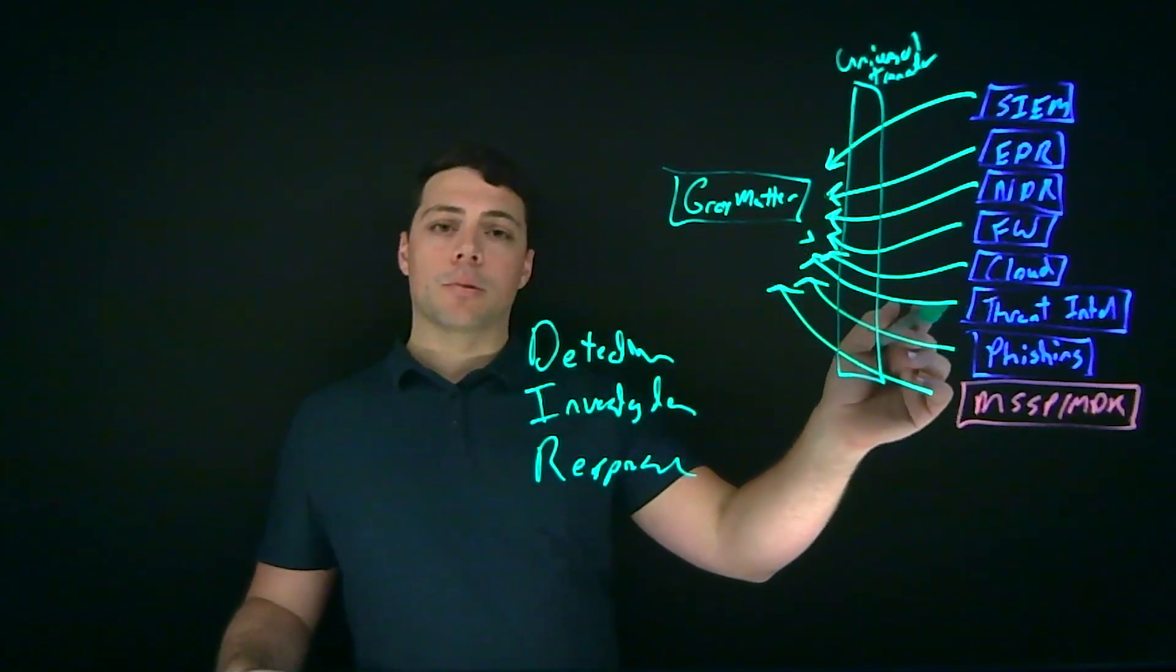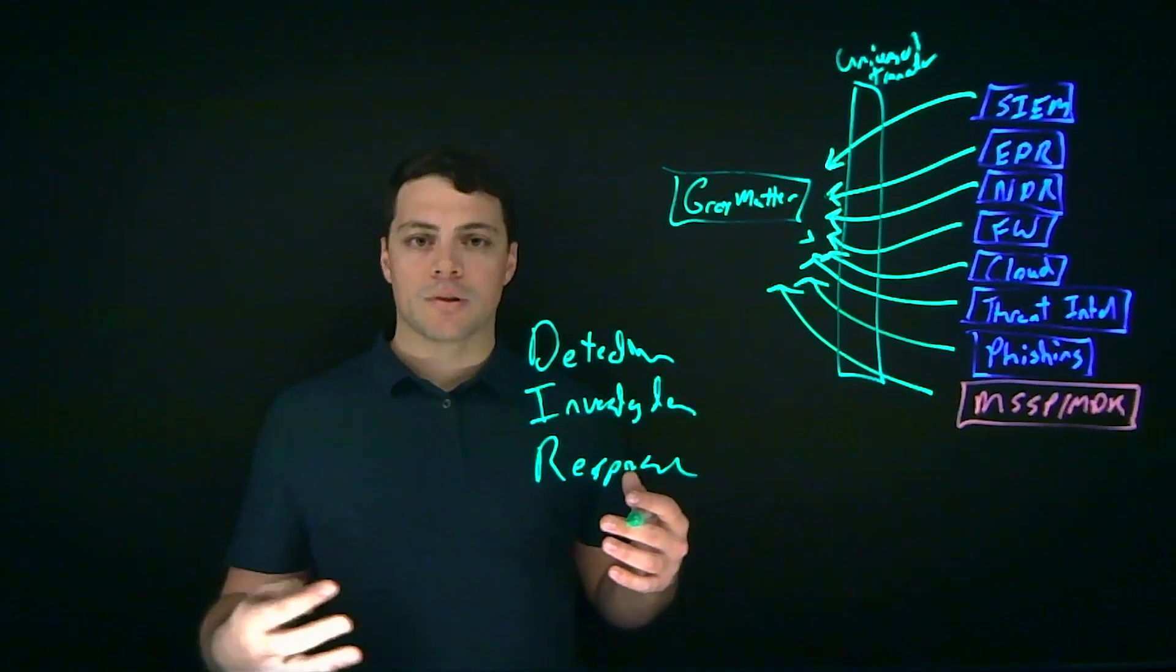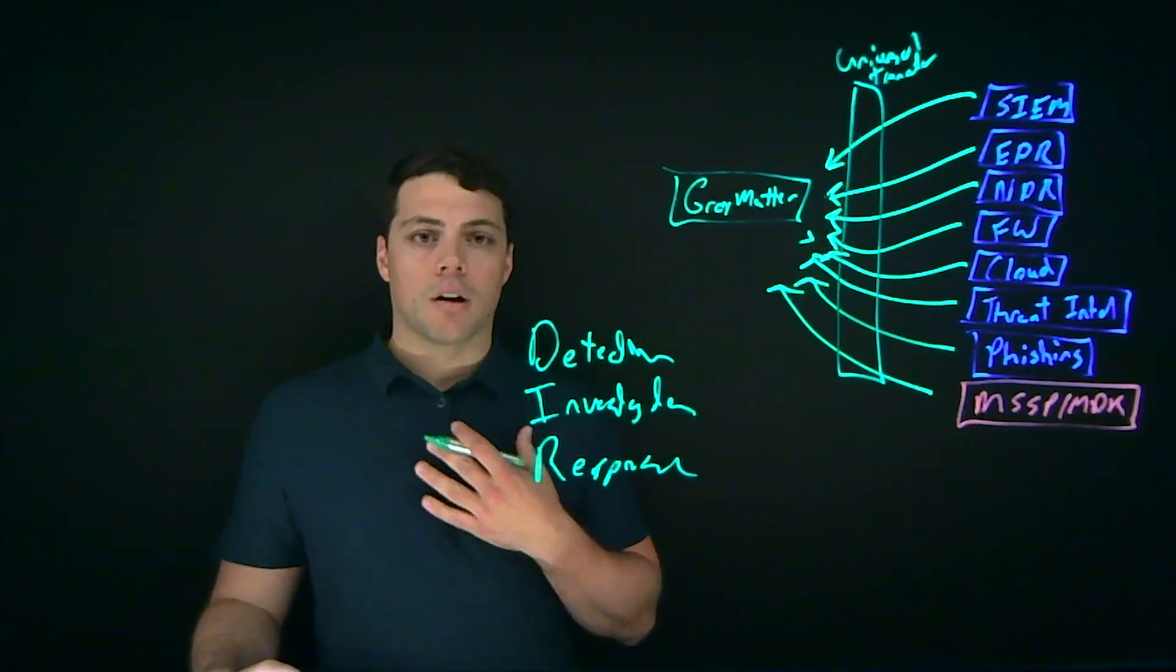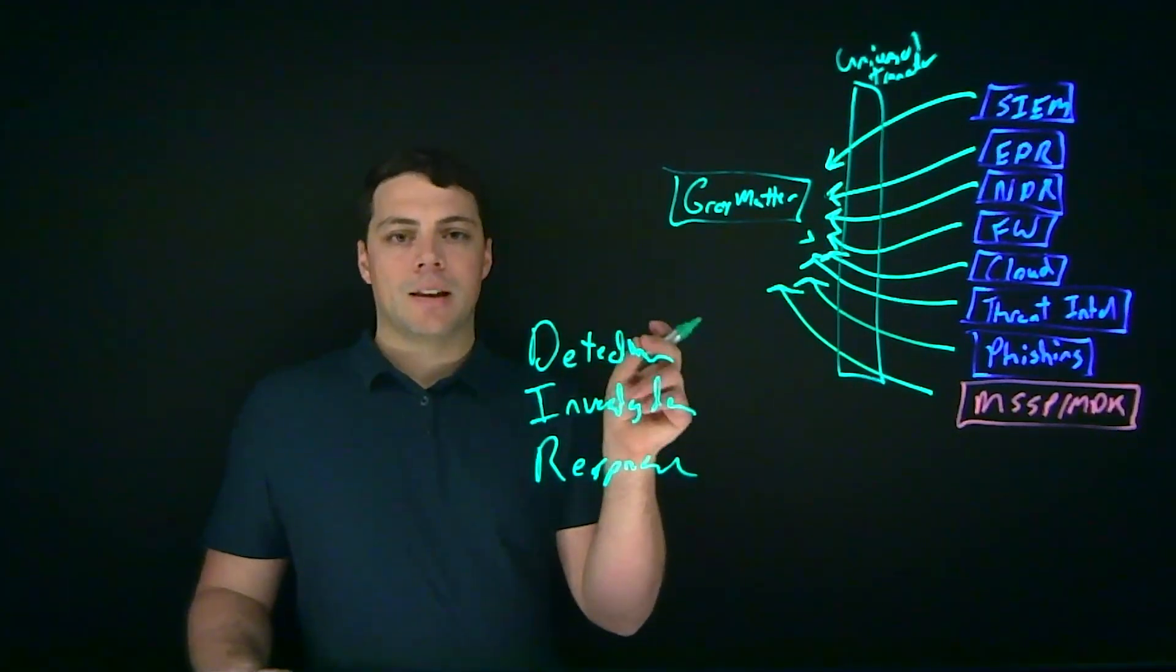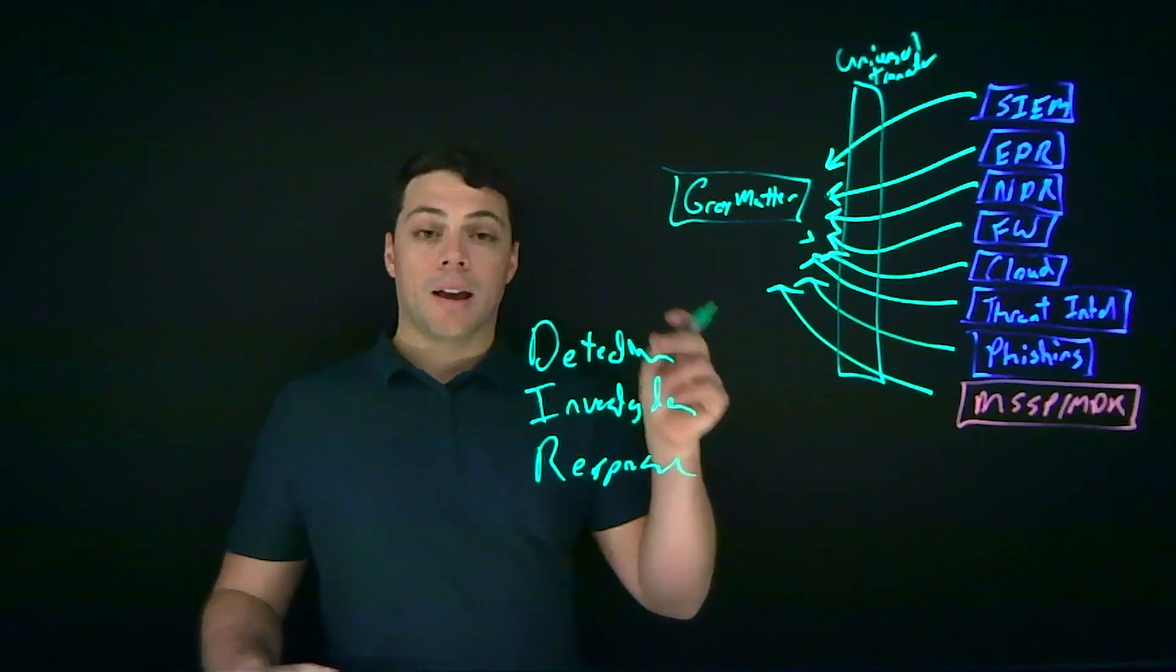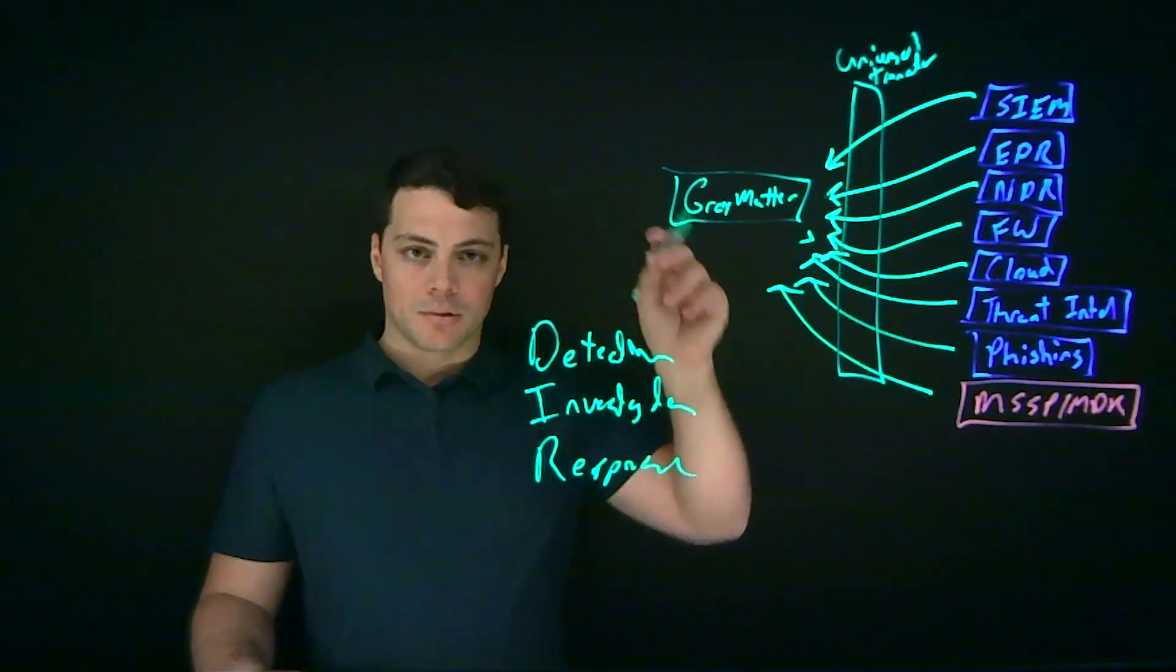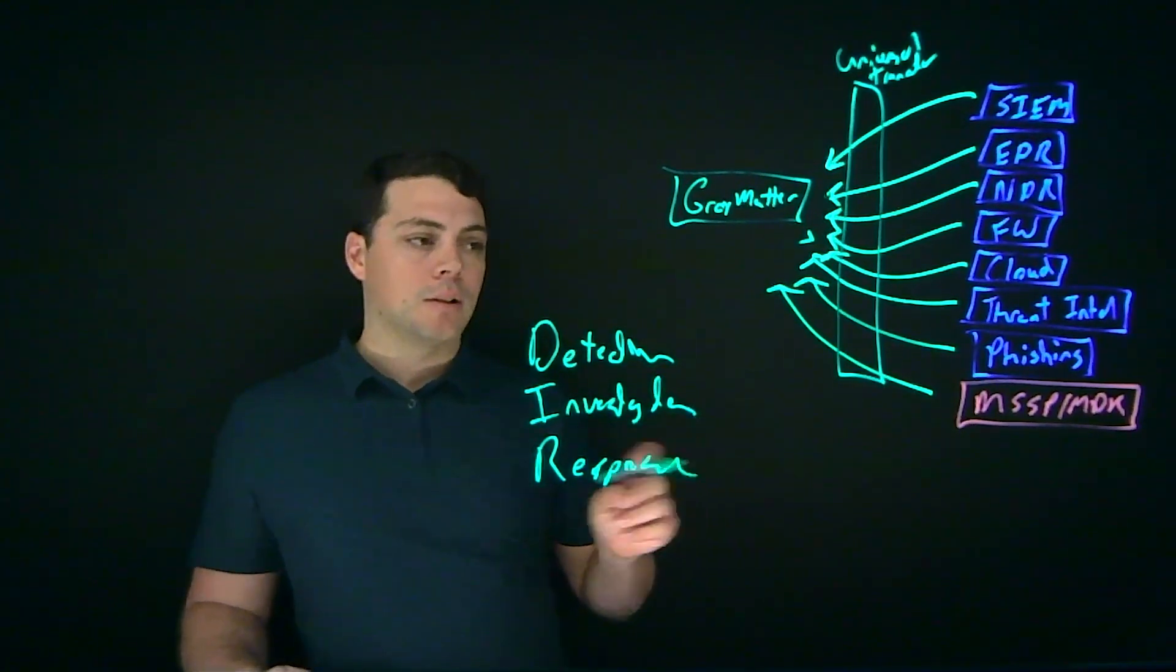Second, we're actually going to be able to query your threat intel, as well as open source. So virus total and other sources, X-Force is a good one, as well as our internal proprietary intelligence to say, hey, is this IOC hash IP URL, is this known bad? And if it is known bad, it can make a decision to continue that on. If it's not, it can actually go ahead and disqualify that initially.